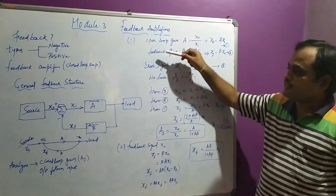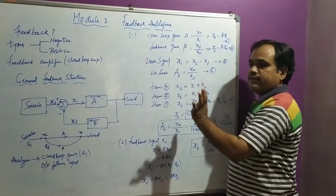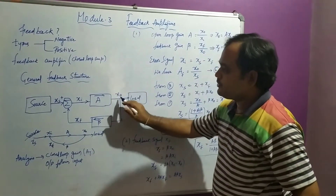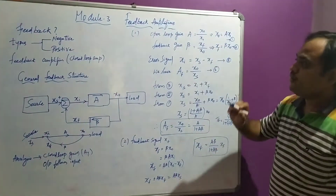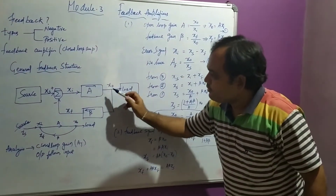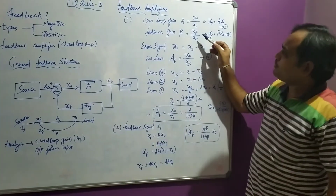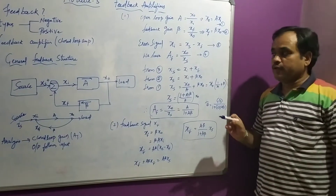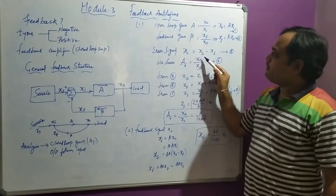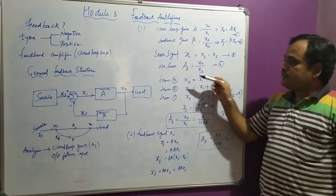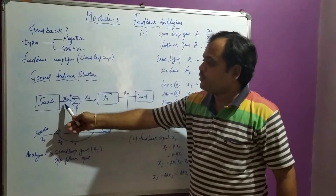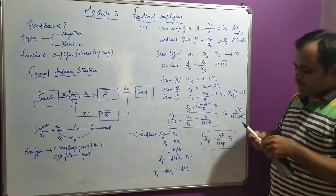To find the closed loop gain, we need some definitions. From the diagram, the open loop gain A is given as output divided by input: A equals X0 divided by XI, which can also be written as X0 equals A times XI. Next, the feedback gain beta: the output is XF and input is X0, so XF divided by X0 equals beta, meaning XF equals beta times X0. The error signal XI is defined as the source signal minus the feedback signal: XI equals XS minus XF.